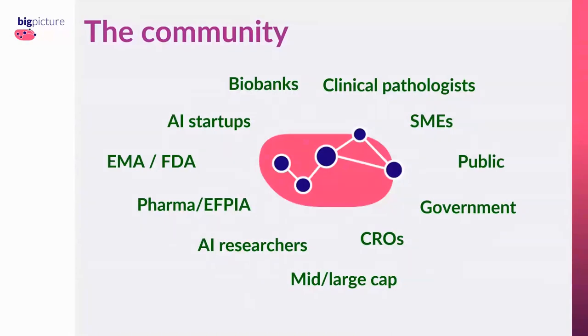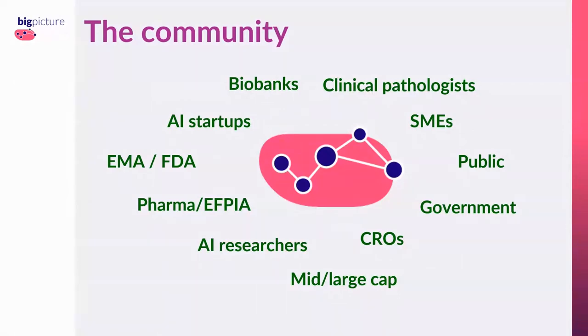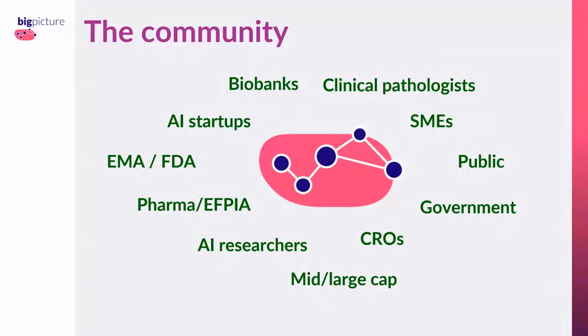Regarding the Big Picture logo — the pink shape is actually meant to represent a cell, not a neural network. It has the H&E color scheme. We jokingly called it 'the potato.' The blue dots represent different parties in the community — pathologists, companies — connected in a network. It took a long time to get to the final logo design.